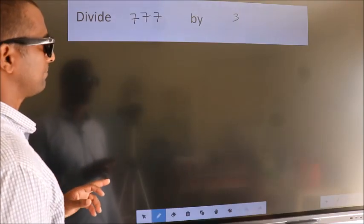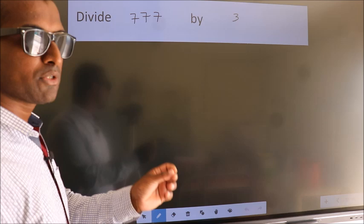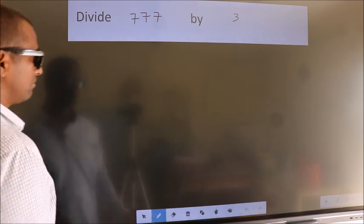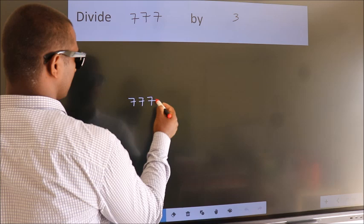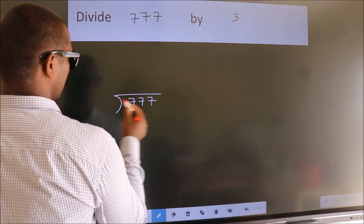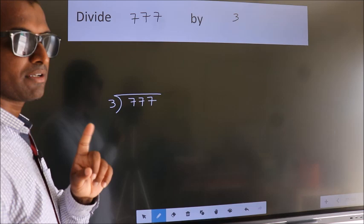Divide 777 by 3. To do this division, we should frame it in this way. 777 here, 3 here. This is your step 1.